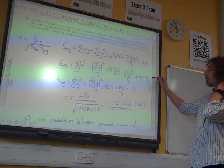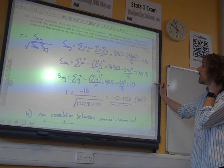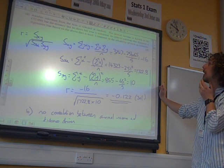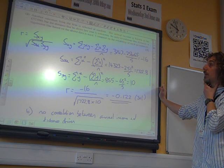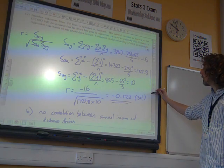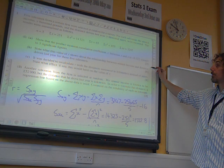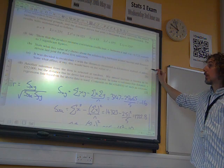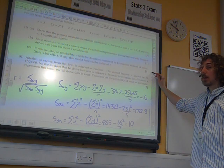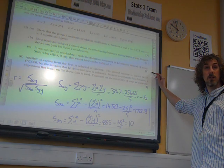Next part of the question says another salesman from the firm is selected at random. His annual income is known to be 52,000, but the distance that he drove last year is unknown. In order to estimate this distance, a regression line based on the above data is used. Comment on the reliability of such an estimate. So 52,000, calculating a regression line based on what we've found so far. What do we think about the reliability of this? What do you think, Richard?